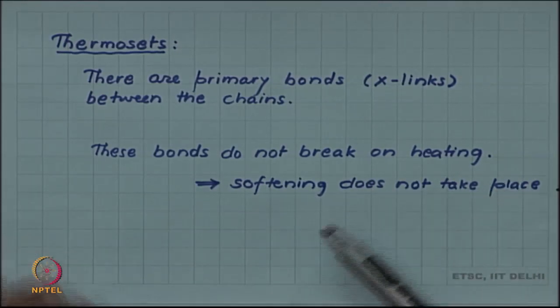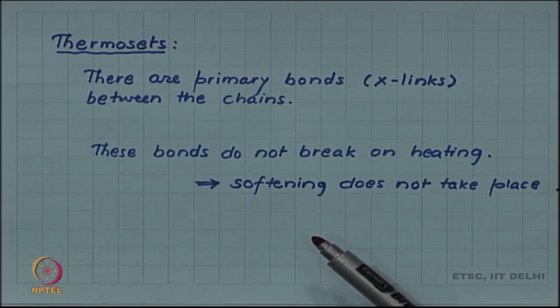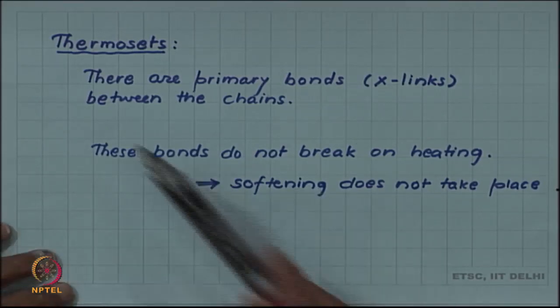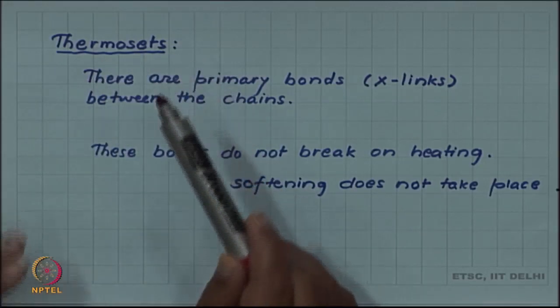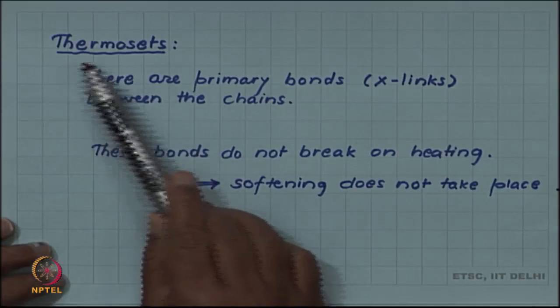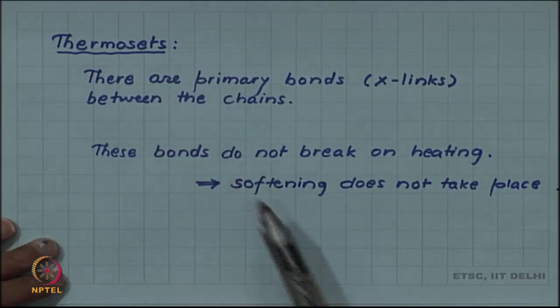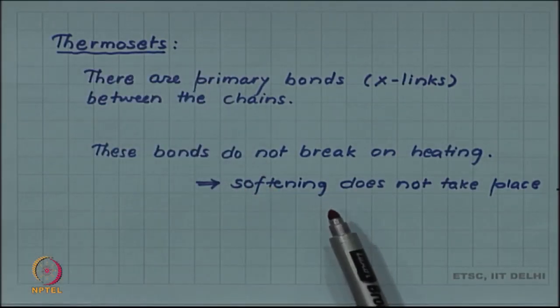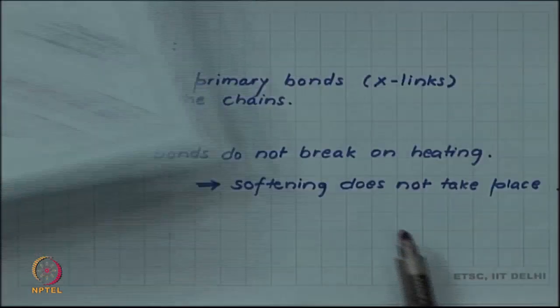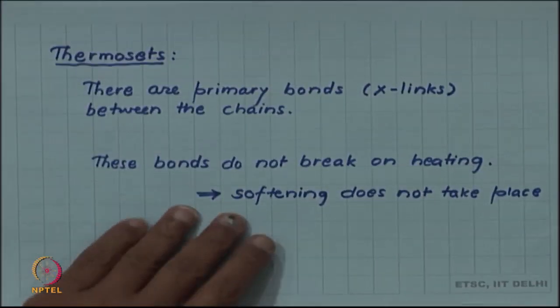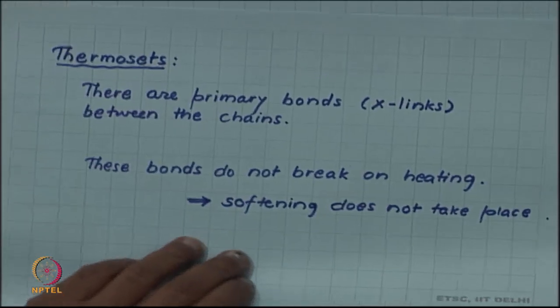They cannot be moulded by heating once their shape is set. After making the polymer and setting it for the first time their shape is set. That is why they are called thermoset. By heating these primary bonds do not break and cannot be overcome, so the deformation or moulding is not easy.